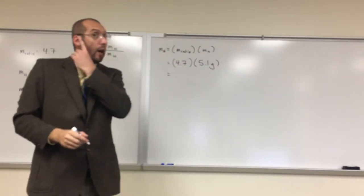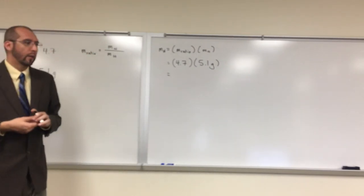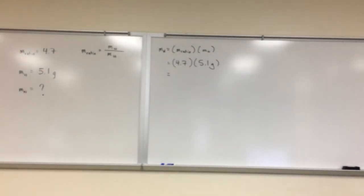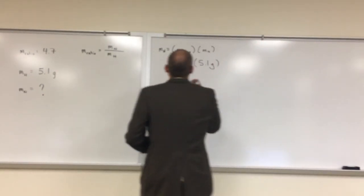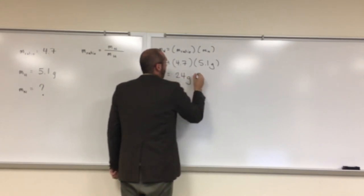Remember your units of grams here. If we use the calculator here, what we can see is 4.7 times 5.1, and we're supposed to write that to 2 sig figs. So we get 24 grams of nitrogen.